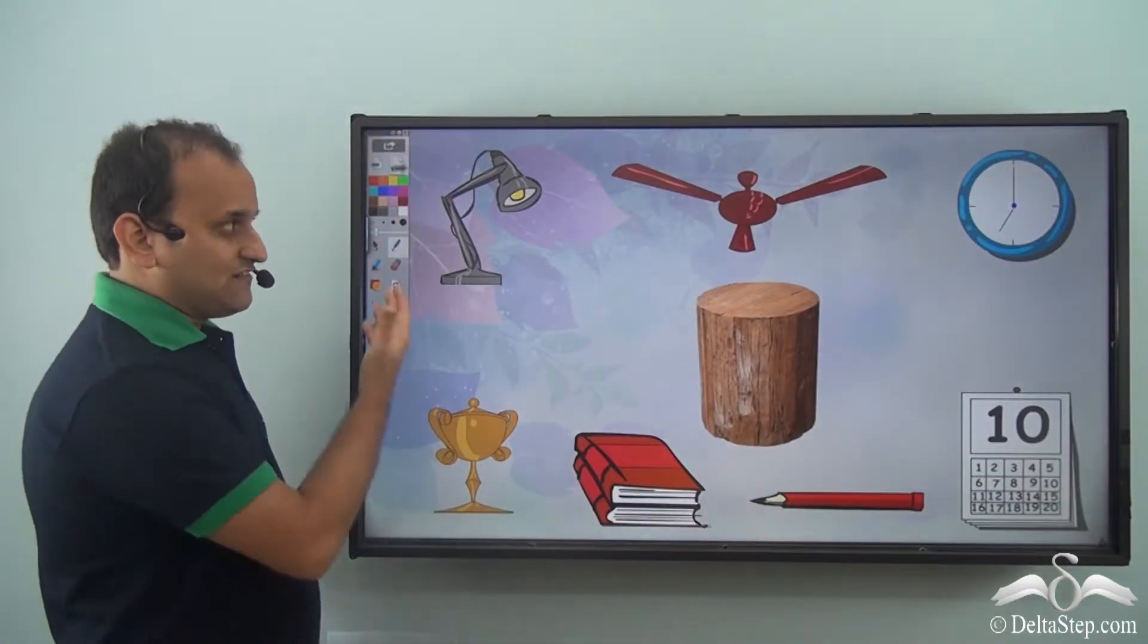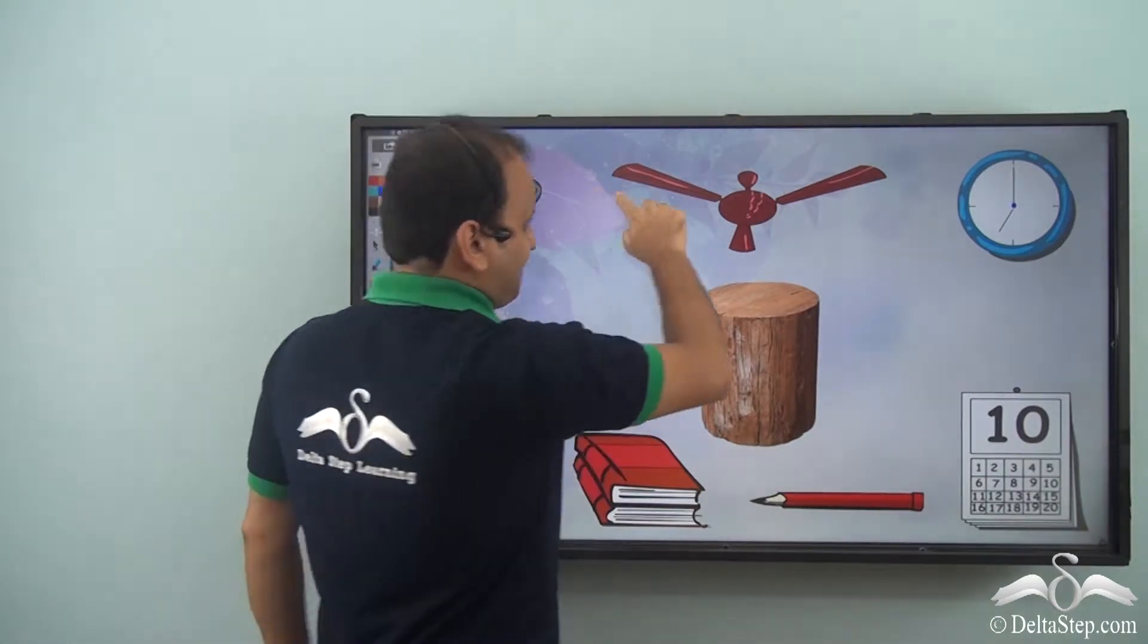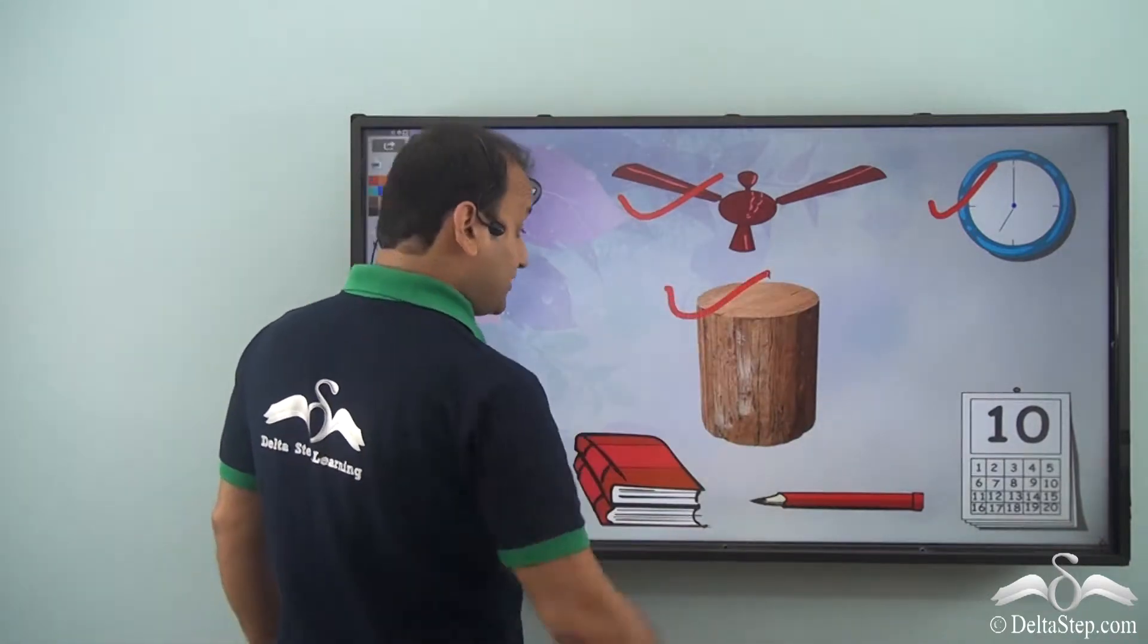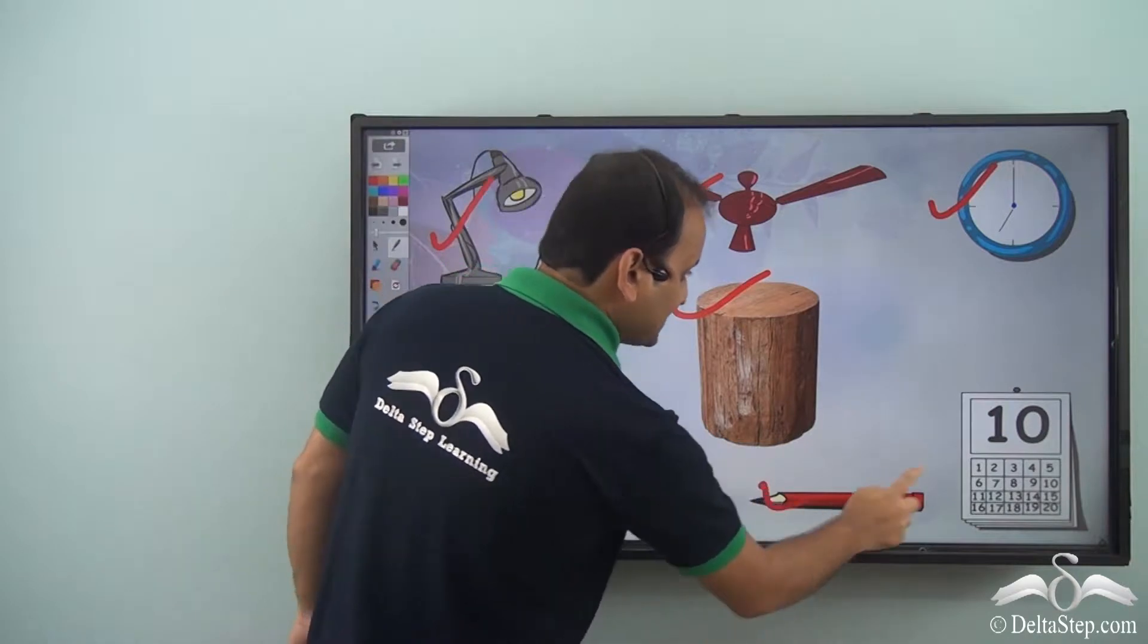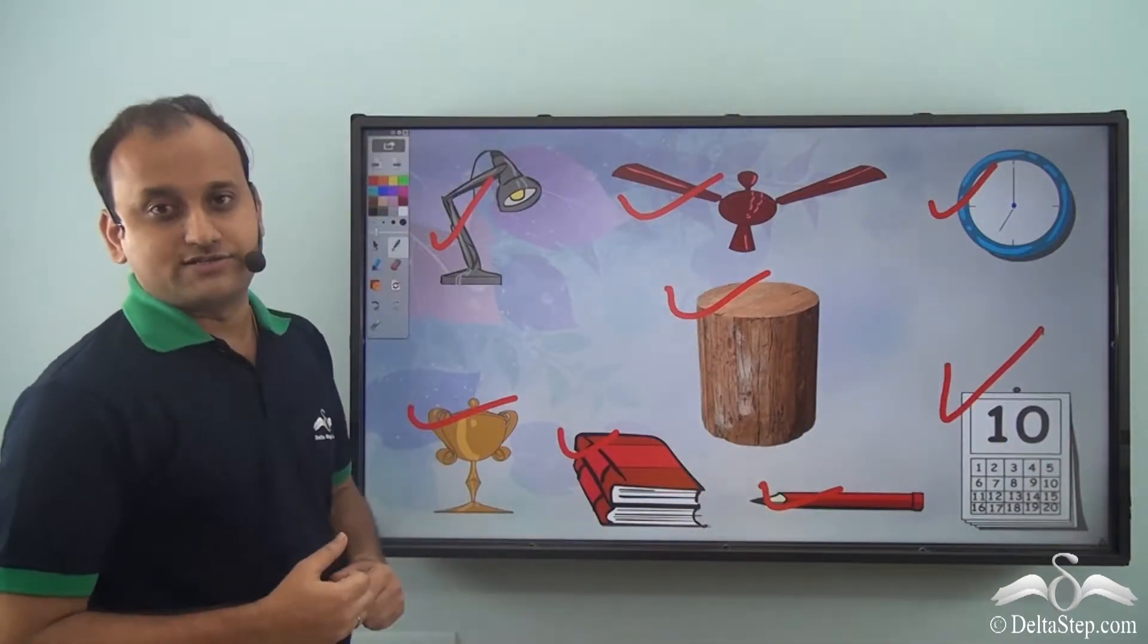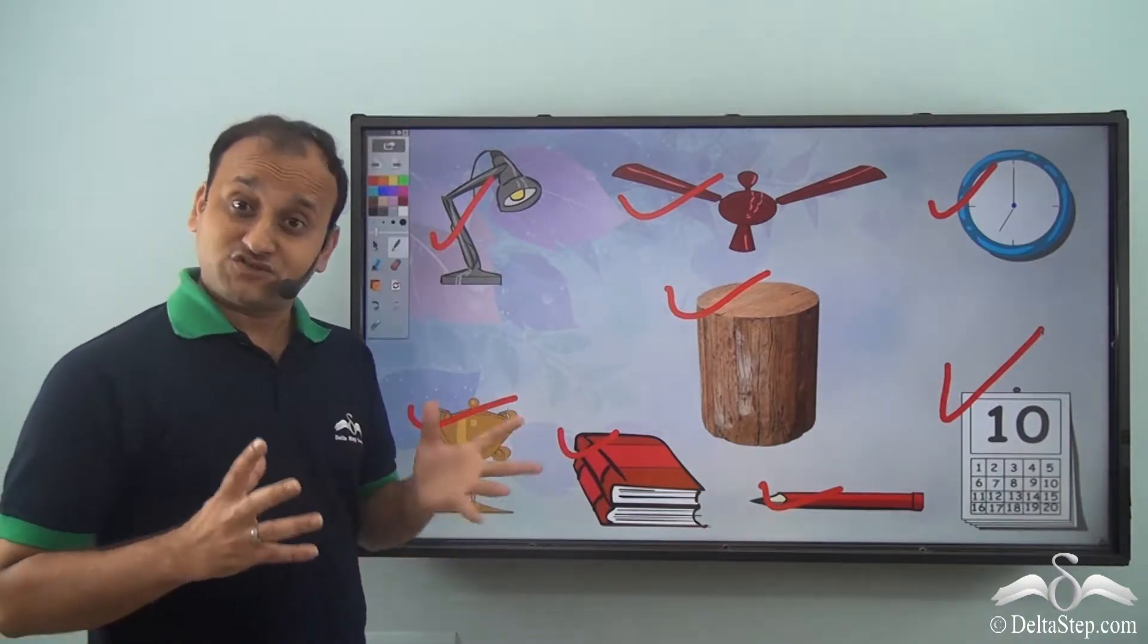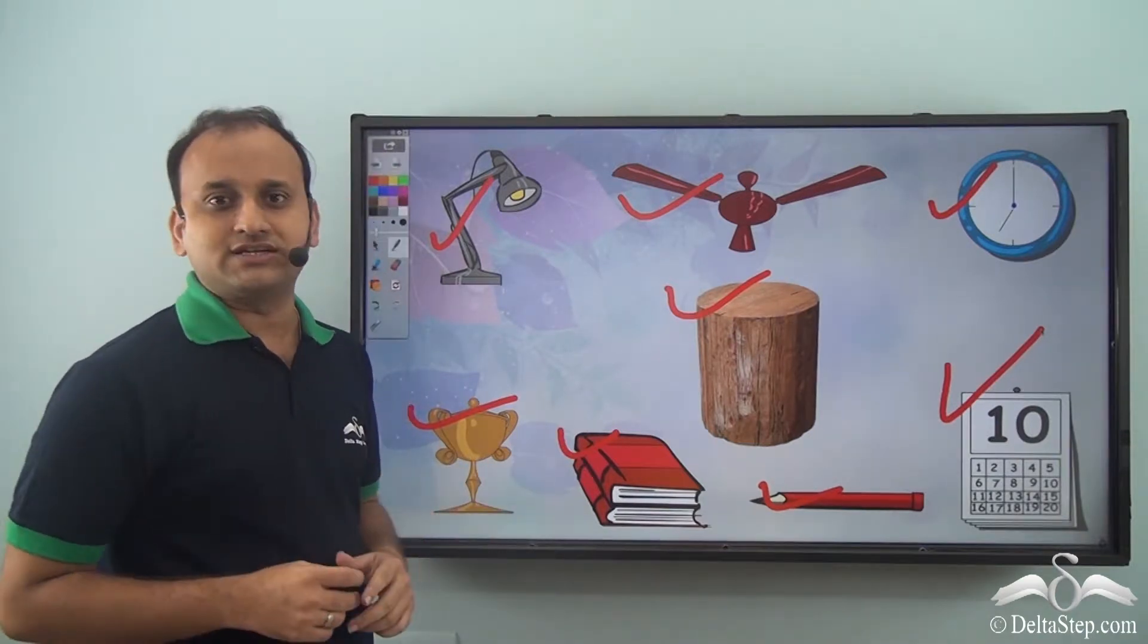You see whatever matter around you, like a lamp, a fan, a wall clock, a log of wood, a trophy, a book, a pencil, even the calendar—all these are solids because they have a fixed shape and also a fixed volume. That is, they will take up the same amount of space all the time.